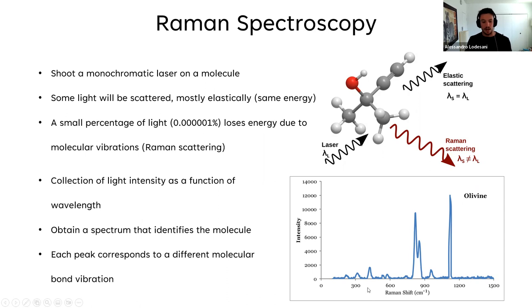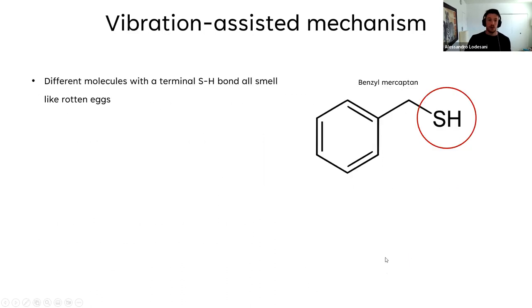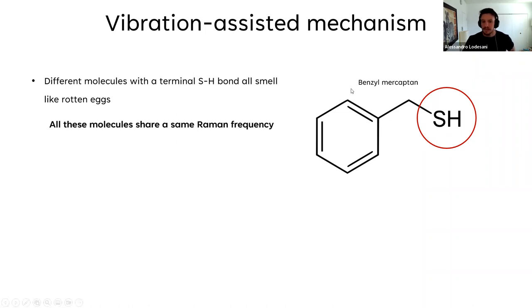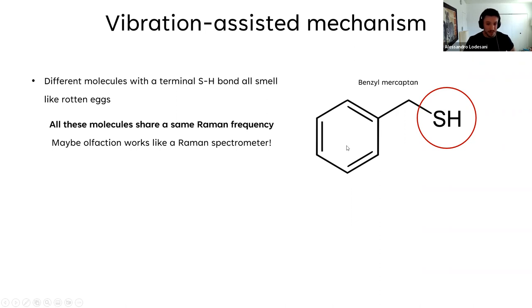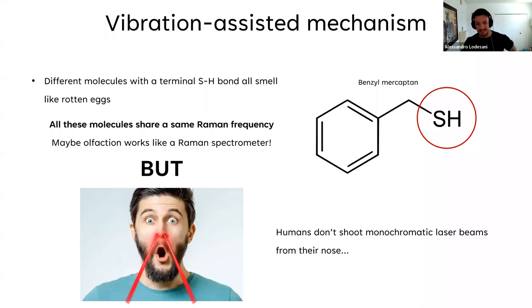Going back to the vibrational theory: all those compounds that smell the same actually have the same Raman frequency. So maybe our olfactory system works like a Raman spectrometer. But there's a catch — humans don't shoot monochromatic laser beams from their noses. So while vibrations seem relevant, the mechanism can't be Raman spectroscopy. This is where quantum tunneling comes in.